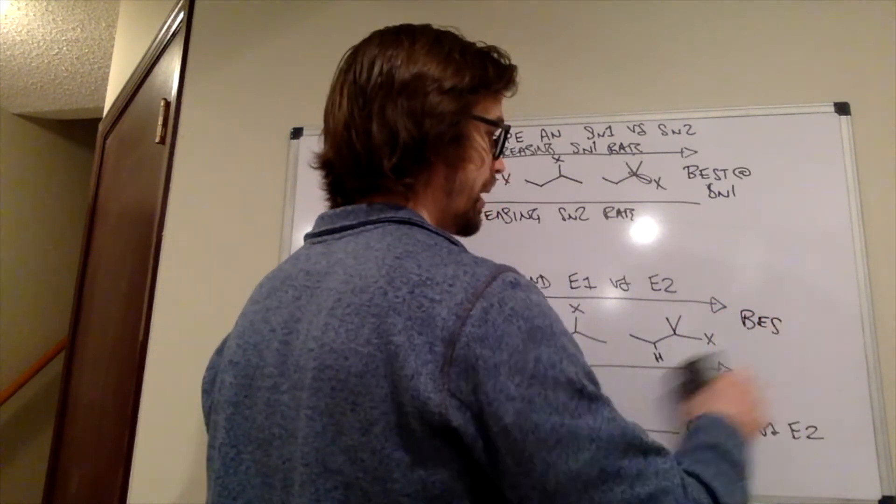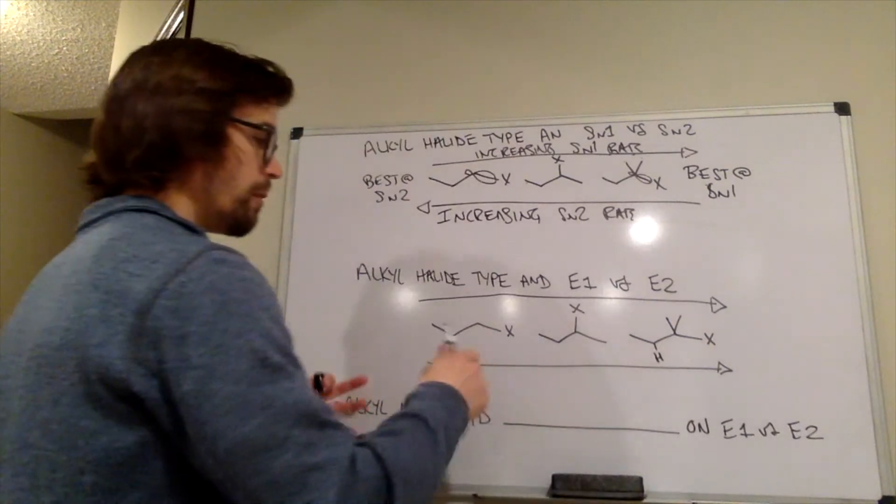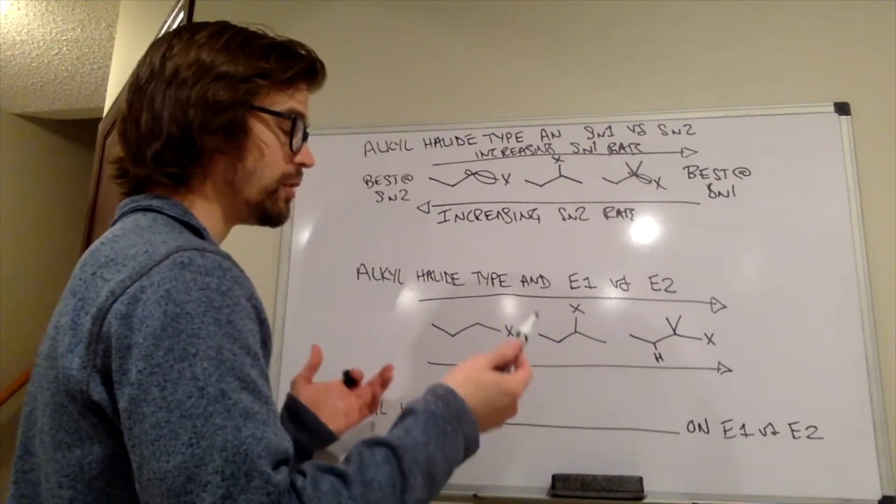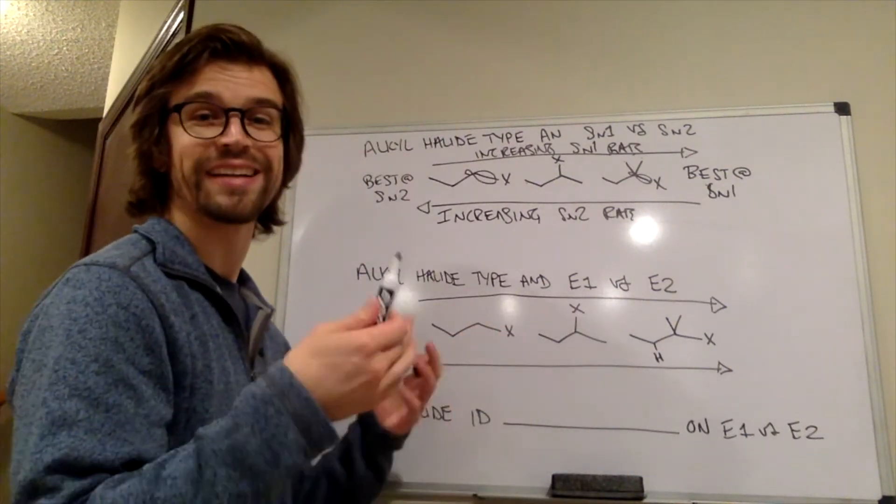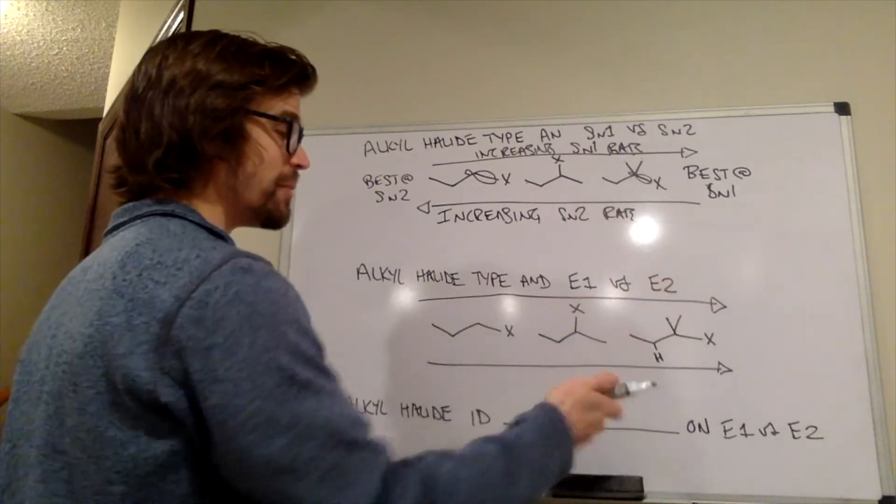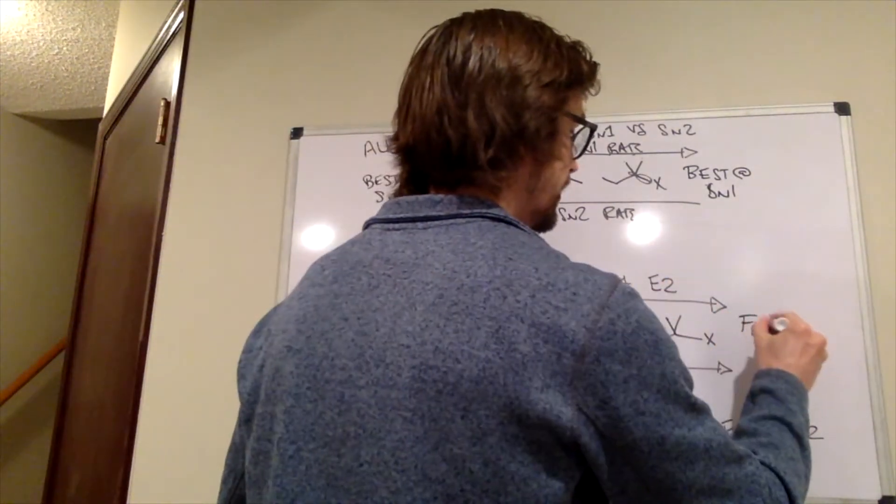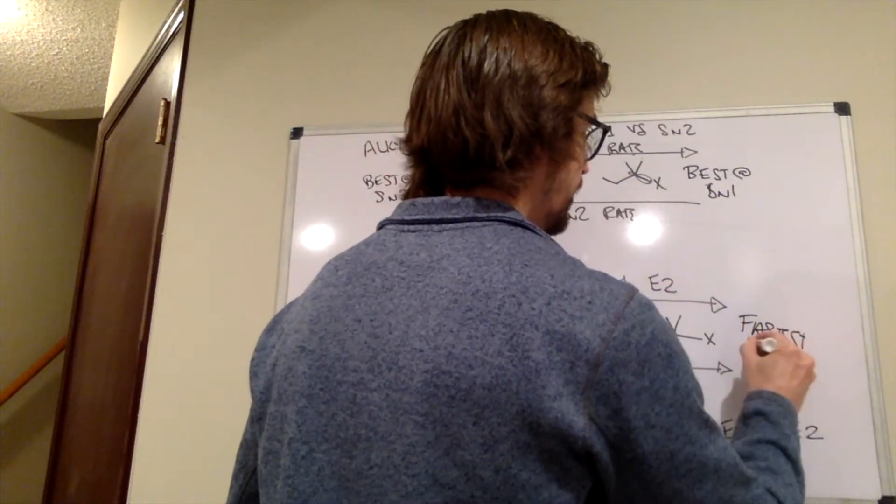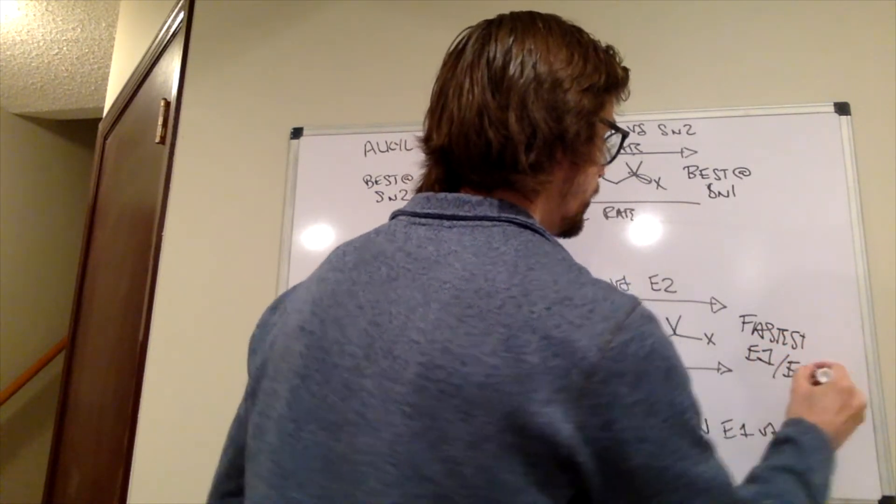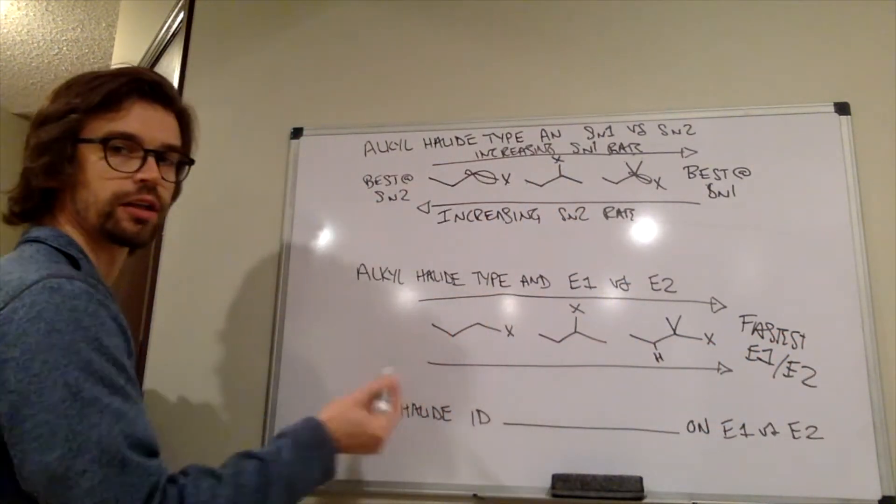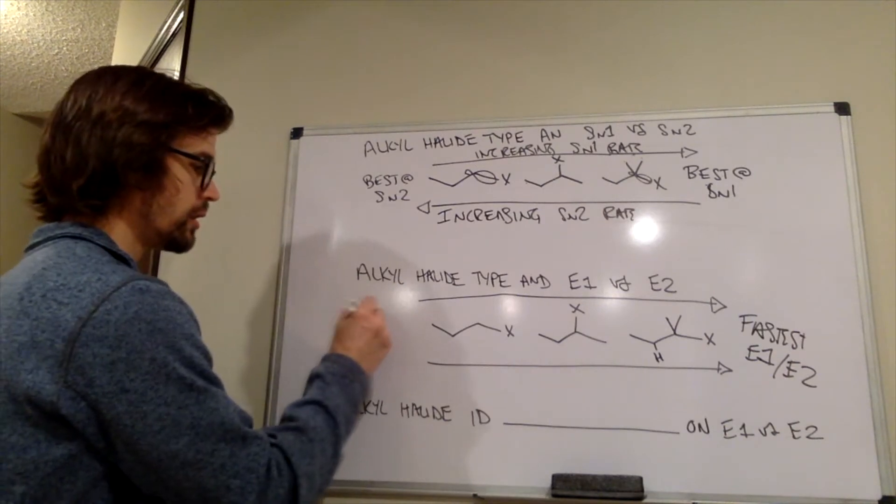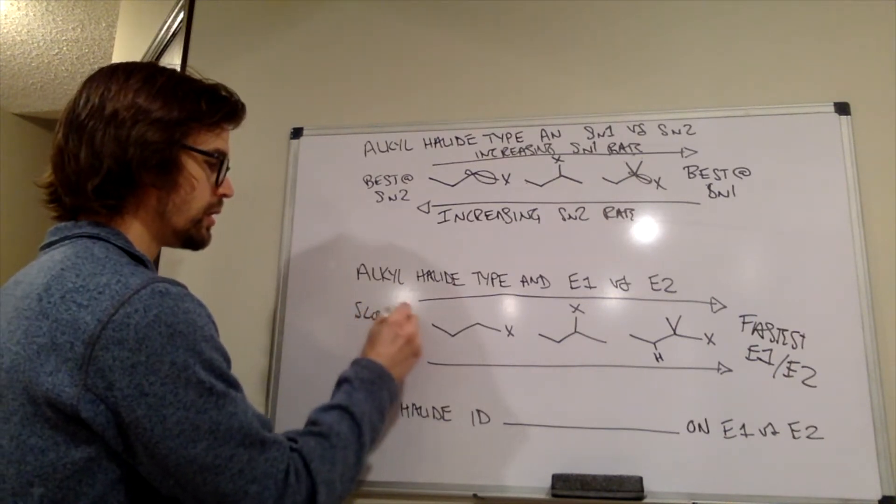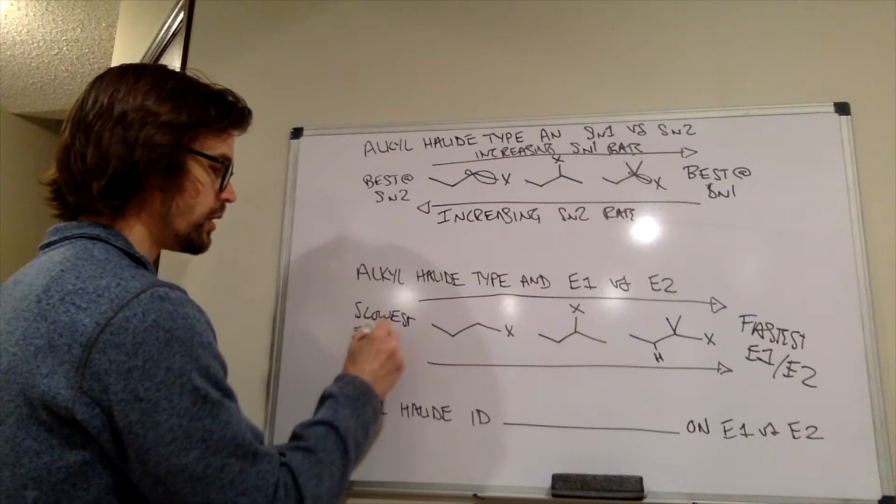All right, I guess we'll not write best over here, but essentially both E1 rate and E2 rate increase in the same direction. So we have fastest E1 slash E2, and with the primary alkyl halide, this is the slowest E1, E2.